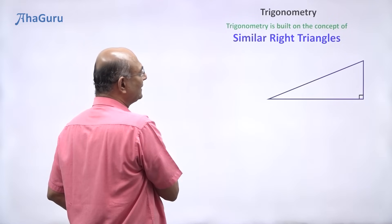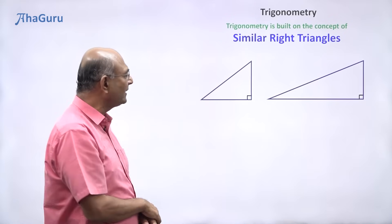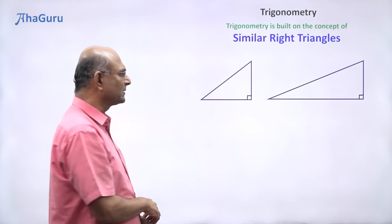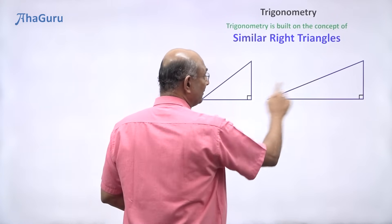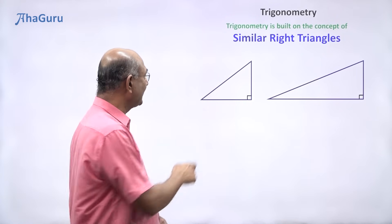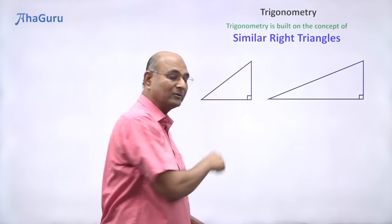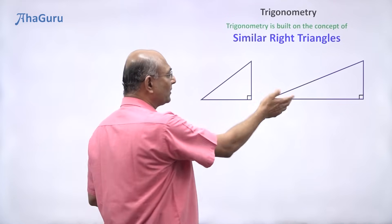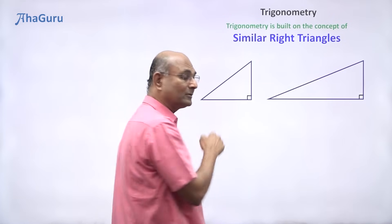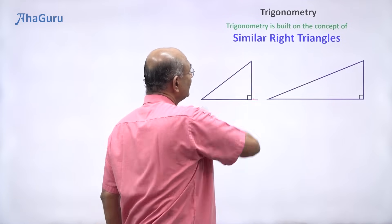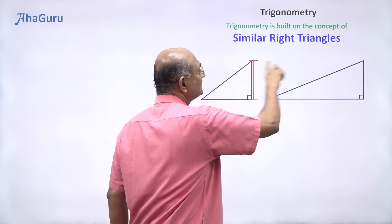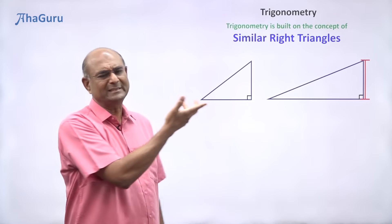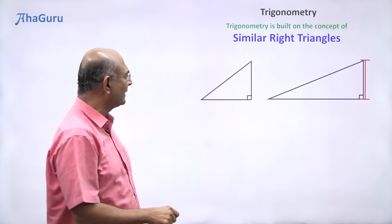So I have one right-angled triangle here and another right-angled triangle here. Do they look similar? No, they don't look similar. They both have a 90-degree angle, one of the angles. You can see that this angle is equal to that. But just one corresponding angle being equal is not enough. Is this angle equal to that? No. This side is equal to that, but that doesn't mean that these two are similar. Just by looking at it, you know they are not similar.